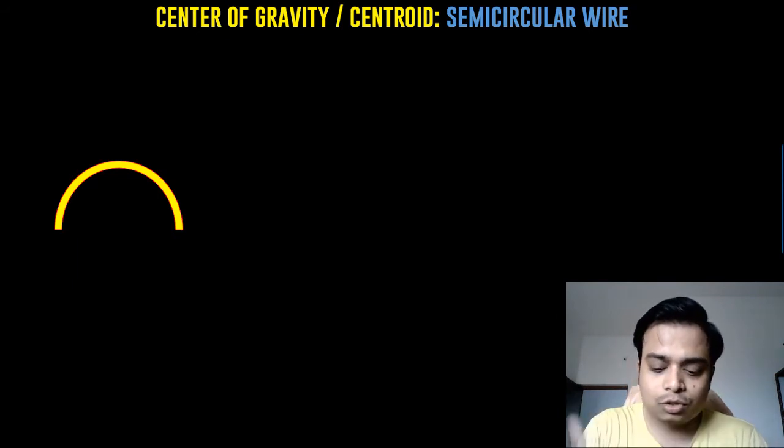Hi everyone, this is Manas, your friend and tutor. In this video we'll work out the center of gravity or centroid for a semicircular wire. This is in fact a one-dimensional object, and the formula for calculating its centroid is going to be slightly different — we will have the operator in terms of DL and not DA as in the previous videos.